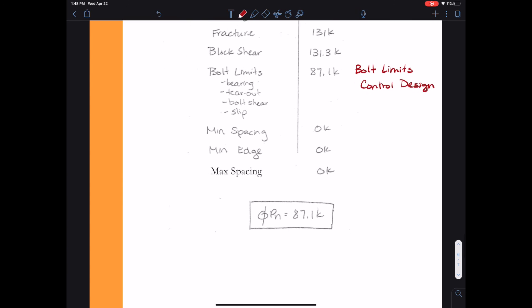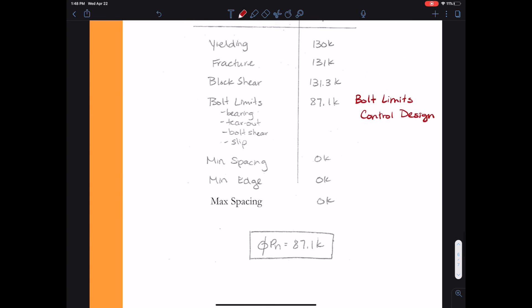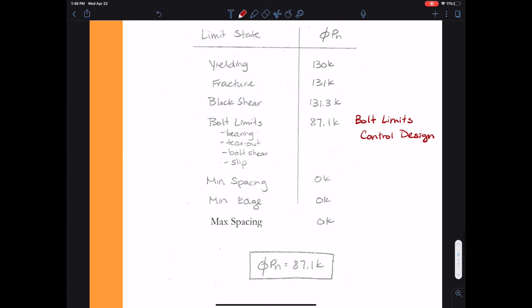So now, considering all the limit states, the maximum force that this connection could handle, considering it as a slip critical connection, is 87.1 kips. Until next time, stay strong my steel friends!